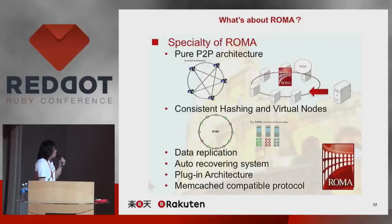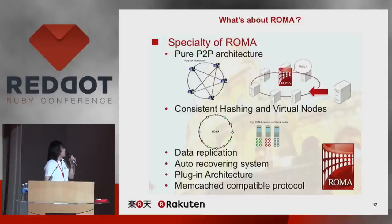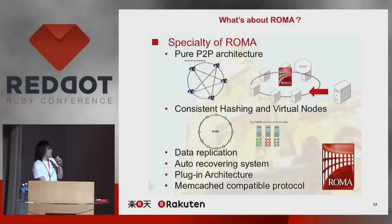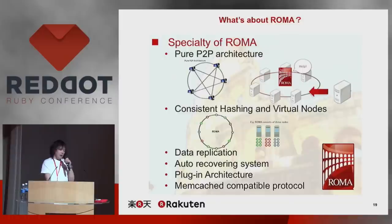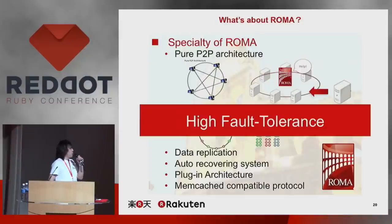ROMA has unique and good specialties. First, ROMA adopts a pure P2P architecture and uses a consistent hashing method, which means ROMA has high scalability. Next, ROMA replicates data and recovers that data automatically when an error occurs, which provides high fault tolerance.